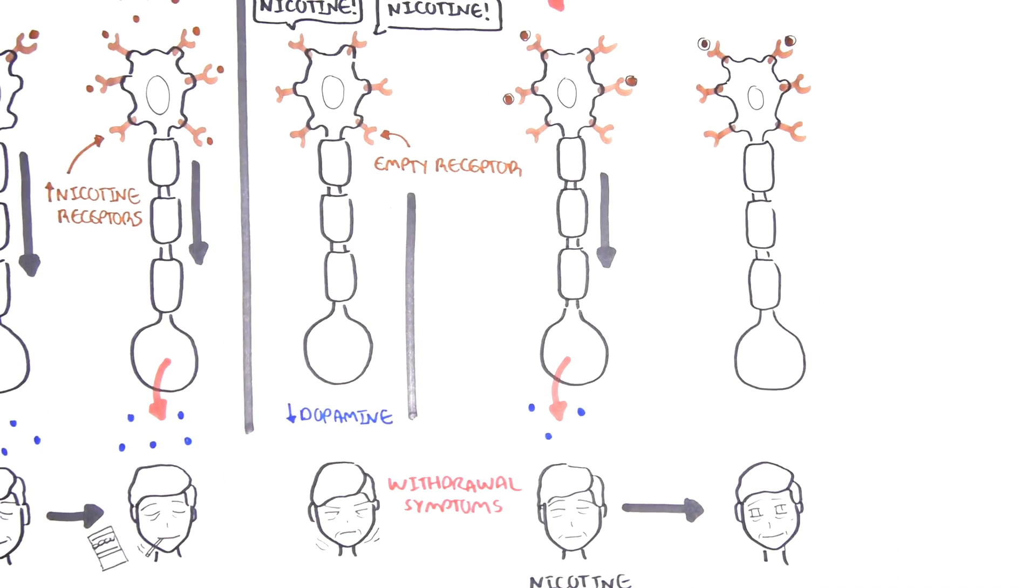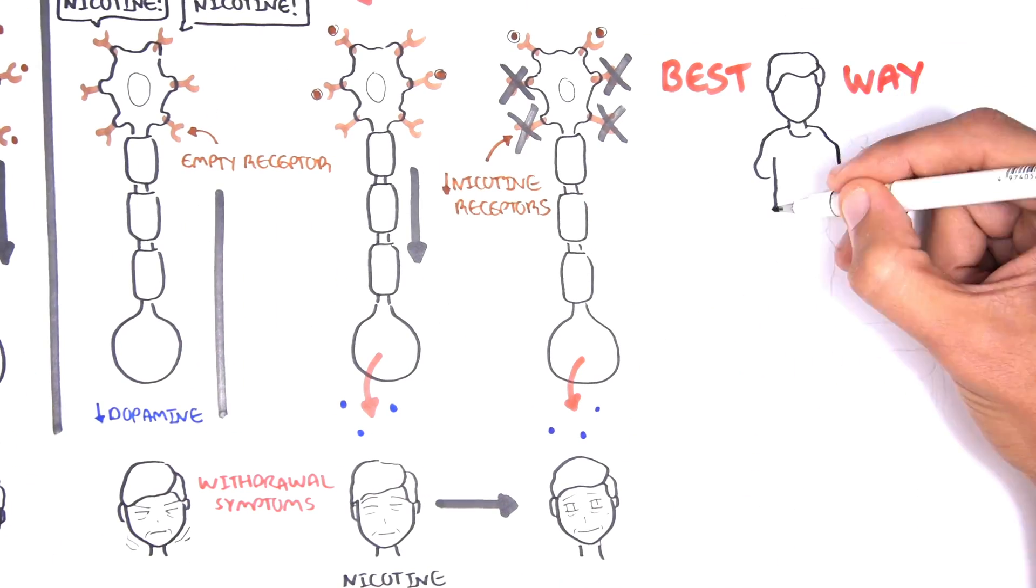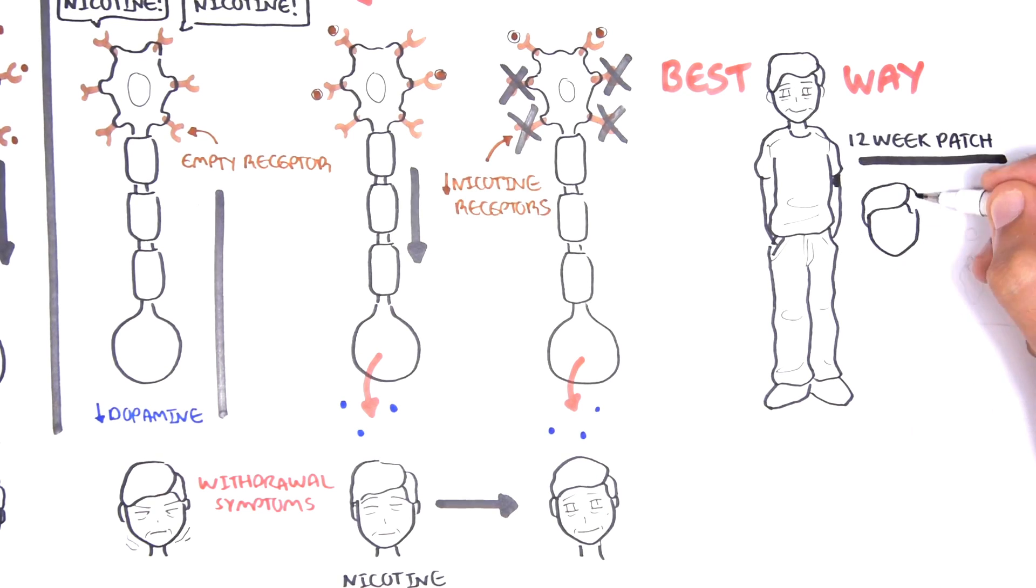NRT weakens the cravings and retrains the brain to start losing its extra nicotine receptors. Using both long and short-acting forms of NRT together is more effective than using one type alone. Use the patch for that steady low level of nicotine throughout the day and then the gum, lozenge, spray, or inhaler for those moments when you have shorter, stronger cravings.